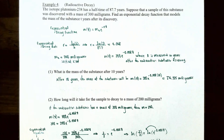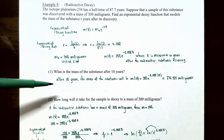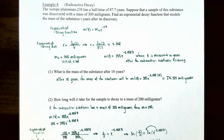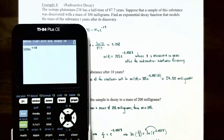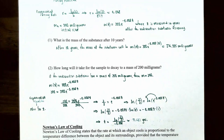Part 1: what is the mass of the substance after 10 years? Replace t with 10: m(10) = 300 · e^(−0.008 × 10) ≈ 276.935 milligrams. So after 10 years since discovery, about 276.935 mg of plutonium-238 remains — we've only lost about 23 milligrams over 10 years, which makes sense given the half-life is 87.7 years, meaning it takes a very long time to decay to half the original amount.